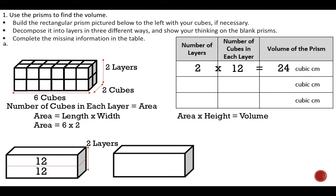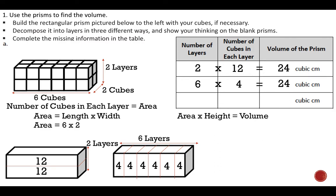For this second model, I'm going to think of it more like a loaf of bread. Instead of having layers going up and down, I'm going to look at the layers going to the left and right. I still have four cubes in each layer but won't draw the specific cubes. The number of layers would be six, and the number of cubes in each layer is four. So six times four gives us 24 cubic centimeters.